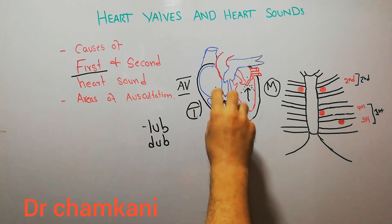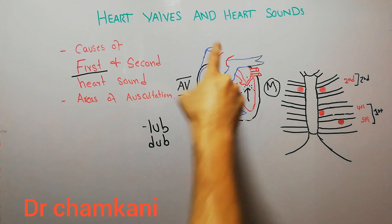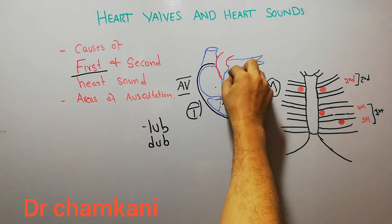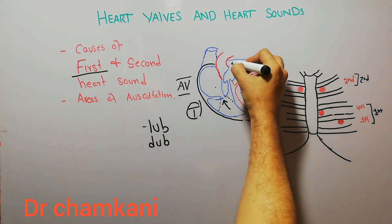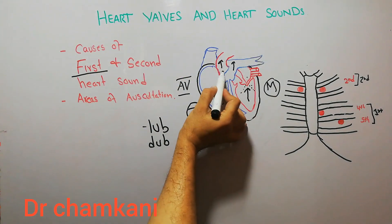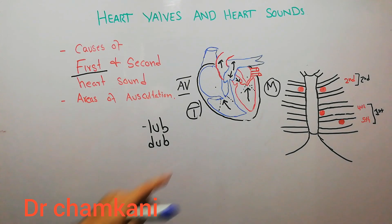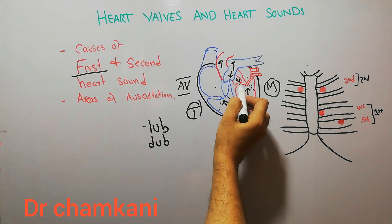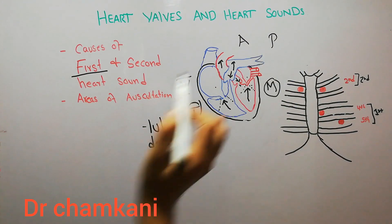Once these valves have closed and blood is pumped into the pulmonary artery and the aorta, the amount of blood in the ventricles decreases and the pressure in the pulmonary artery and the aorta increases. With this increasing pressure, blood starts flowing back, and with the backward flow of blood the aortic valve and the pulmonary valve will close.